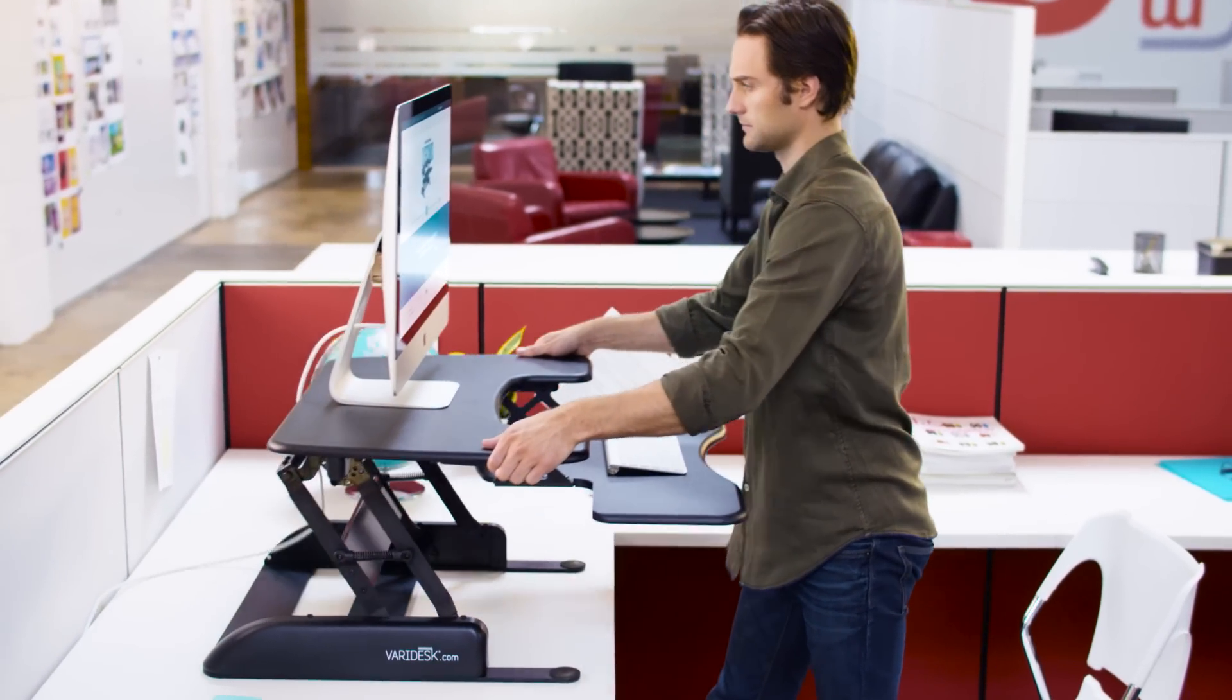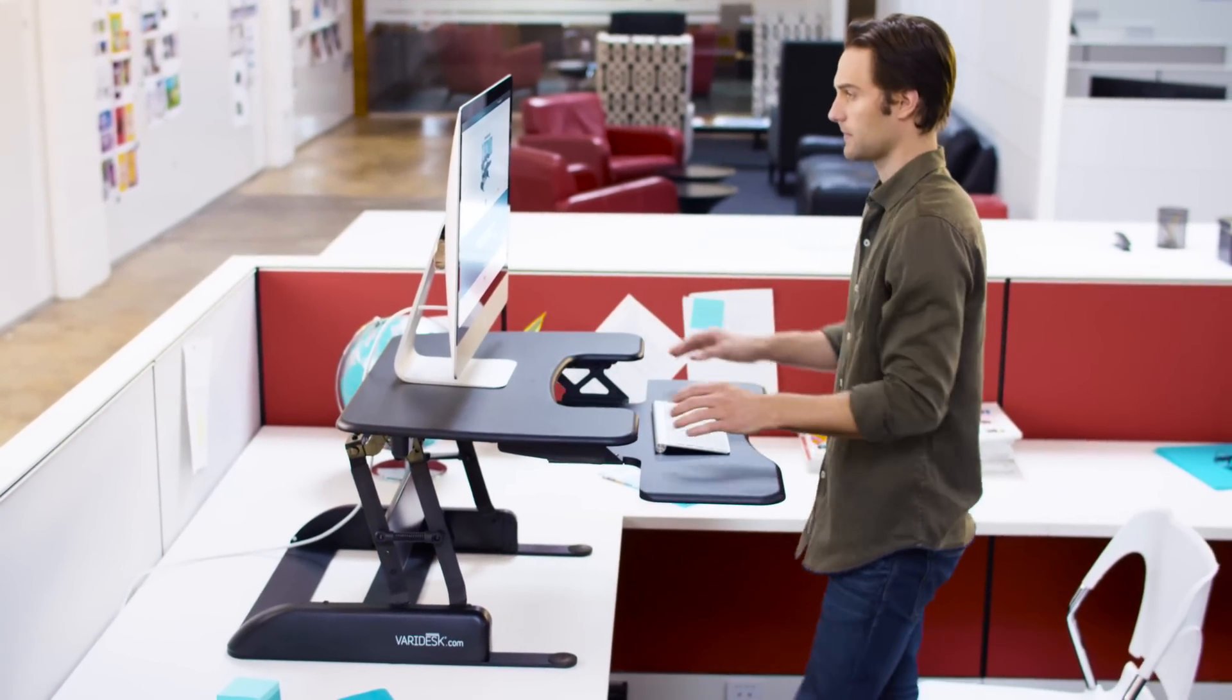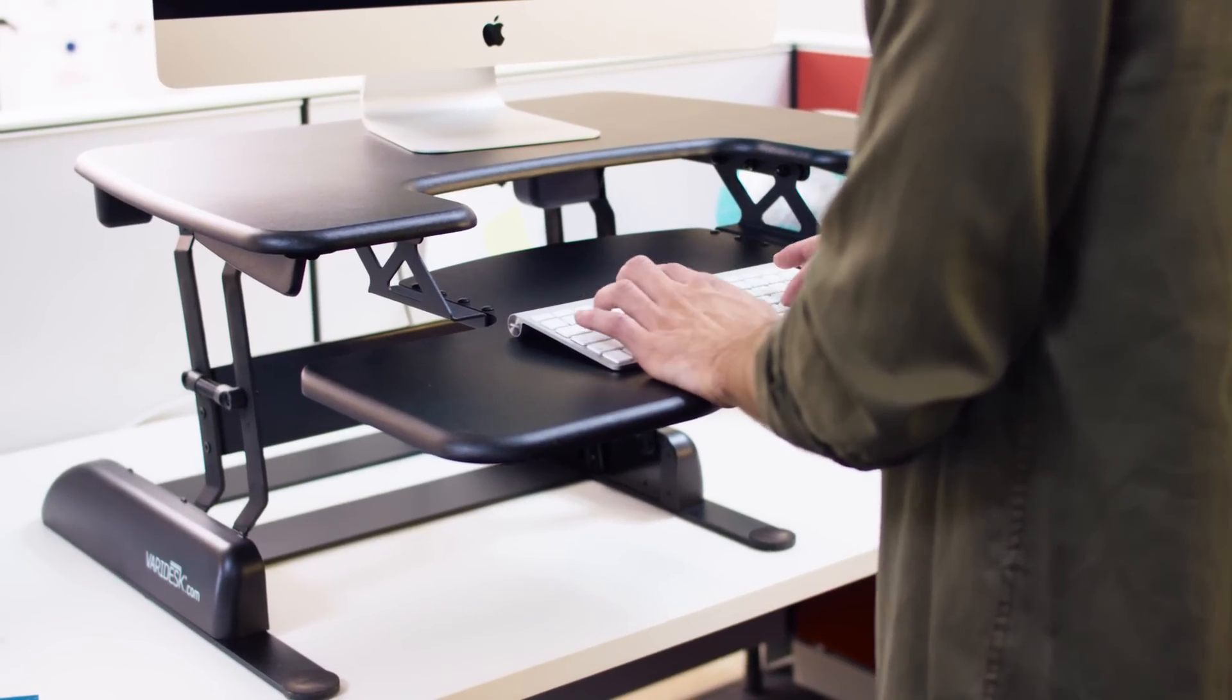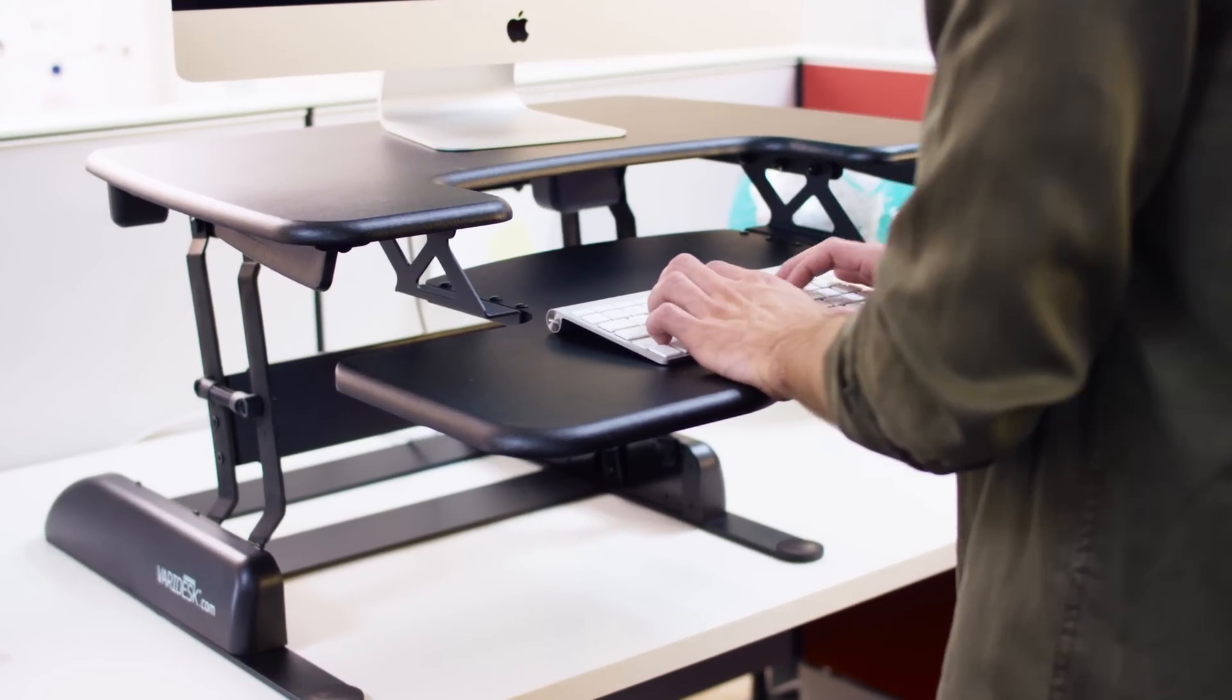The two-tier design features an upper display surface for your monitor and accessories and a fixed lower deck for your keyboard and mouse. Both tiers raise and lower at the same time as you change positions.